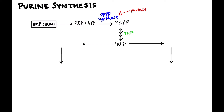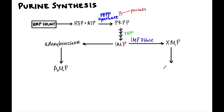IMP is the grandfather of the purines and can go in one of two ways. It can be converted into adenylsuccinate, which itself is then converted into AMP — that's adenine. IMP can also go to XMP through an enzyme called IMP dehydrogenase — another enzyme worth knowing. XMP is then converted to GMP. So PRPP goes through multiple steps to IMP; IMP can go to AMP via adenylsuccinate, or to XMP via IMP dehydrogenase, then to GMP.